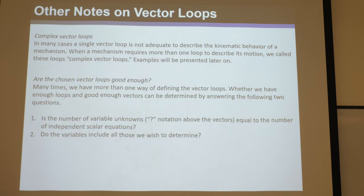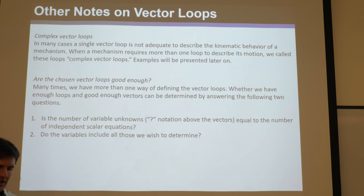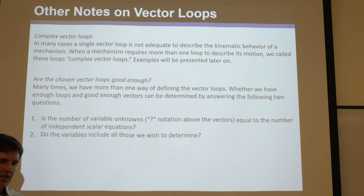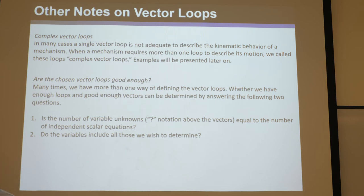So far all the examples have had just one vector loop equation. But any time there are more complex mechanisms — like the one for your project — you'll need multiple vector loops to solve them. There could be multiple closed kinematic chains, and you'll need to solve for multiple vector loop equations to find all the unknowns. These are called complex vector loops.